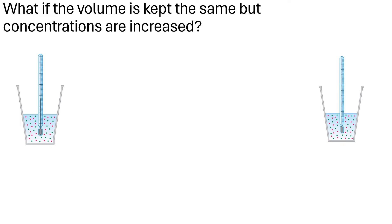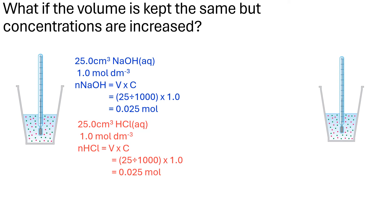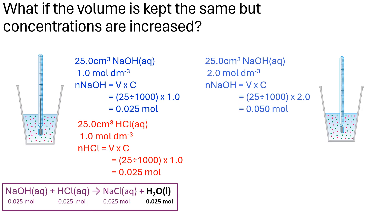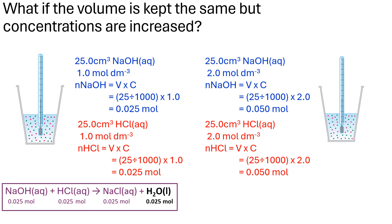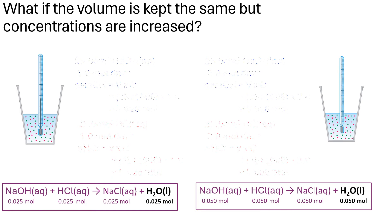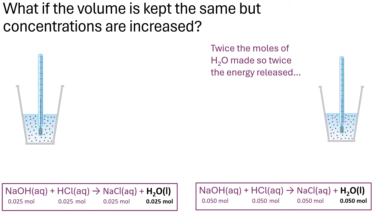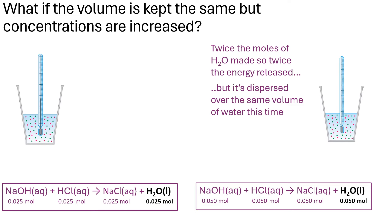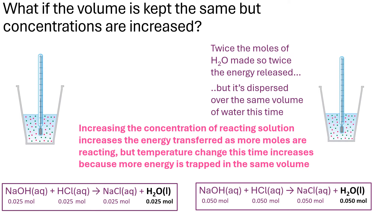What if we keep the volume the same but increase the concentration instead? The same scenario is on the left hand side, but on the right hand side we're now going to use 2 mol dm⁻³ of each of our reactants, which means the amount of water produced is doubled. As before, this could produce twice the energy. However, it's dispersed over the same volume of water, so this will affect the temperature change — the temperature change will double because the energy is trapped in the same volume but there's twice as much energy being released.